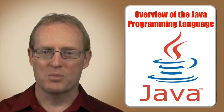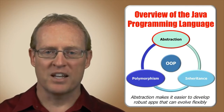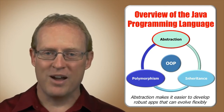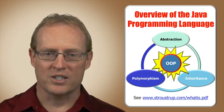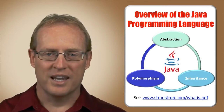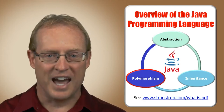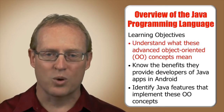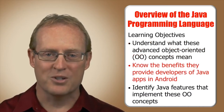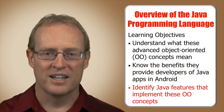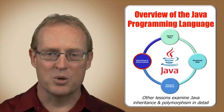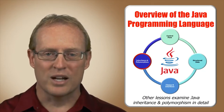Welcome to the second part of this lesson, which continues our overview of the Java object-oriented programming language. Most programming languages support data and control abstractions, but object-oriented languages go above and beyond. In particular, Java supports more advanced OOP concepts including inheritance, which enhances code reuse by allowing a class to receive methods and fields defined by another class, and polymorphism, which enables transparent customization of inherited methods. After completing this part, you'll understand what these concepts mean, know the benefits they provide developers of Java apps in Android, and be able to identify Java features that implement them.